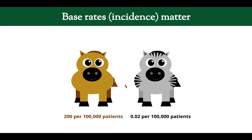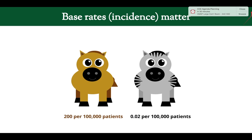To summarize: pretest probability is estimated by matching the patient's illness script with the disease illness script — the more it matches, the higher the probability; the less it matches, the lower the pretest probability. Always account for base rates: rare diseases are still rare even if there are matching features, and common diseases remain common. Thanks for watching.